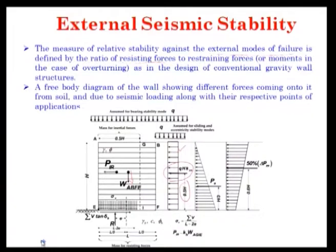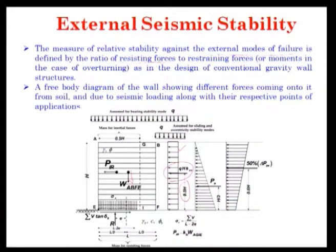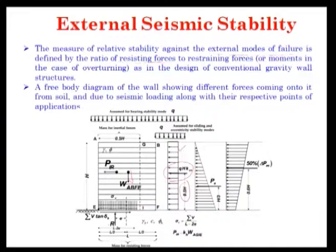Using the Meyerhof approach, we first find the pressure distribution diagram. The three components are: pressure due to surcharge, pressure due to earth, and pressure due to seismic load. All three are combined to find the resultant earth pressure at the base, and the distance of this resultant from the center of gravity (CG) of the entire soil mass and reinforced earth wall. Based on that, the stability analysis is checked.